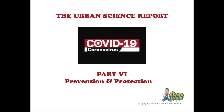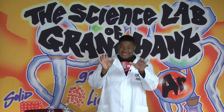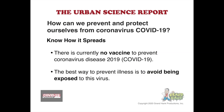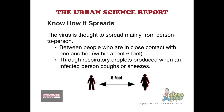Now let's discuss prevention and protection. There are two sides of the coin: protecting yourself and protecting others. The first step to prevention is to know how it spreads. There's currently no vaccine to prevent coronavirus COVID-19. The best way to prevent illness is to avoid being exposed to the virus. The virus is thought to spread mainly from person to person between people who are in close contact within six feet, through respiratory droplets produced when an infected person coughs or sneezes. These droplets can land in the mouths or noses of people nearby or possibly be inhaled into the lungs.